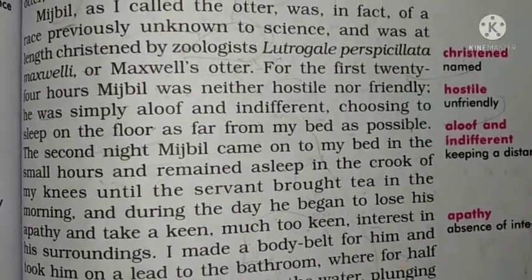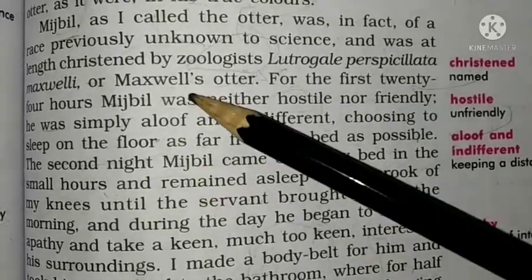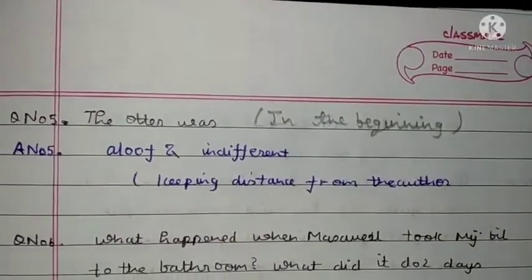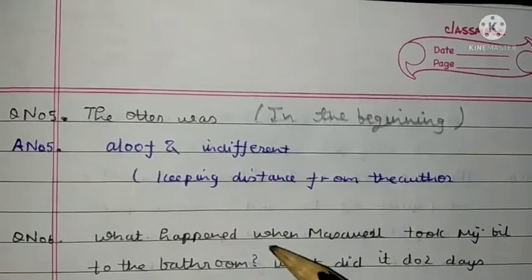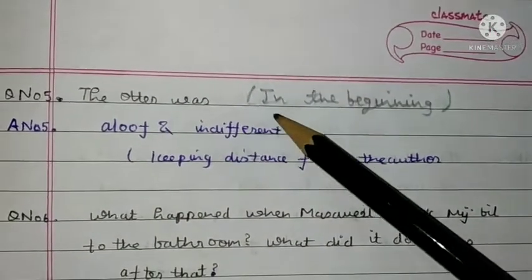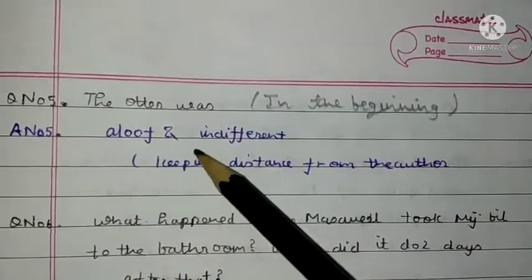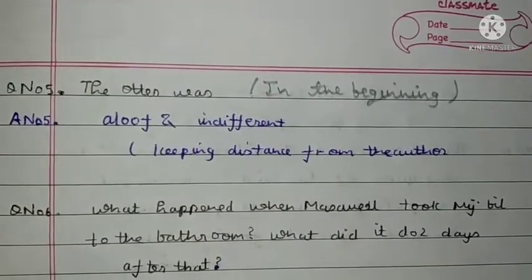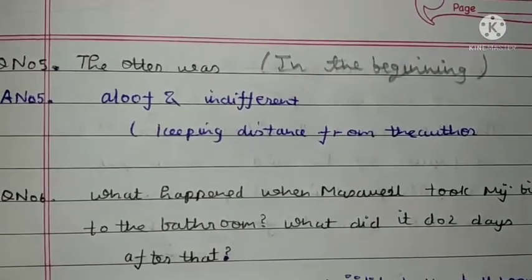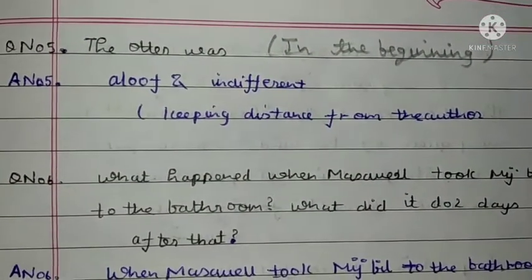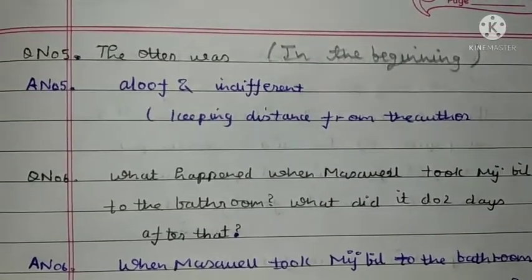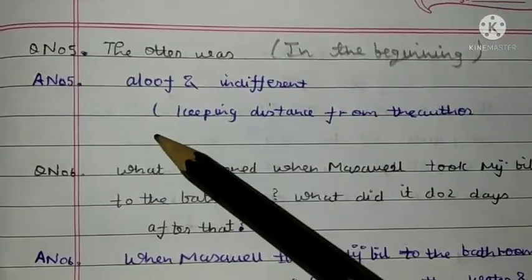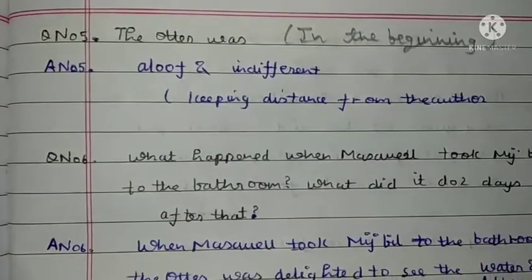Maxwell — this is his first name. Or you could also say Maxwell's Otter. Question 5: How was the otter in the beginning? Aloof and indifferent — keeping distance from the author. The author was being distant; he was not happy with them. He was not kind, he didn't behave like a friend.